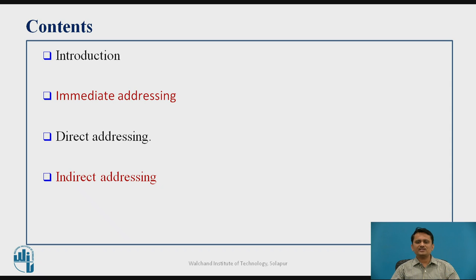Another operand may be available in the data memory. How you give information about the operand — whether it is available in the instruction itself, or if it is in data memory, which location is to be considered — how you access the operand, that is called the addressing mode. Basically, three addressing modes are supported by the PIC microcontroller: immediate, direct, and indirect.